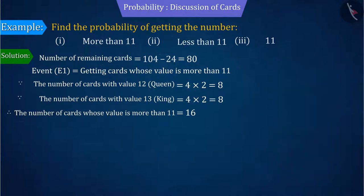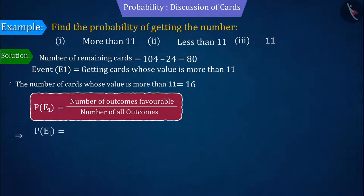That is, with the help of the probability formula, we can say that the number of outcomes favorable to the event is 16 and the number of all possible outcomes is 80. On solving this, the probability of getting cards whose value is more than 11 is 0.2.